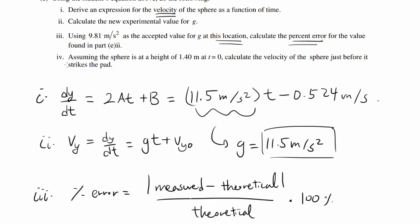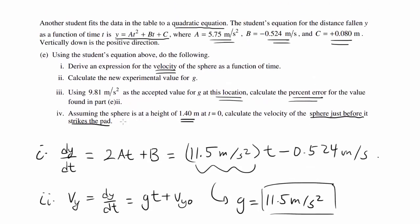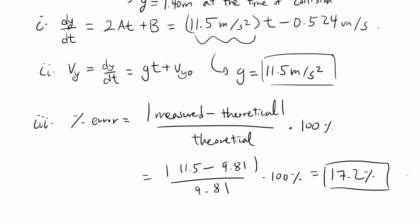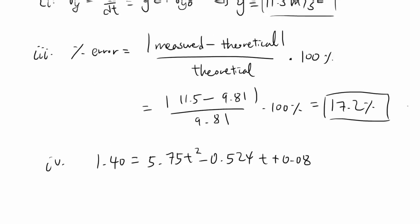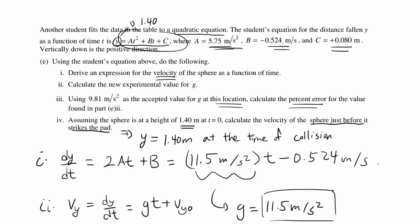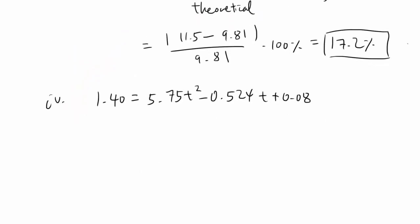Part 4: Assuming the sphere is at a height of 1.40 meters at time zero, calculate the velocity of the sphere just before it strikes the pad. When the sphere strikes the pad, the vertical displacement should be 1.40 meters. We want y to equal 1.40 at the time of collision with the pad. So 1.40 equals 5.75t squared minus 0.524t plus 0.08. Solving for time by either graphing, using quadratic formula, or a numeric solver, you should get time equals 0.527 seconds.